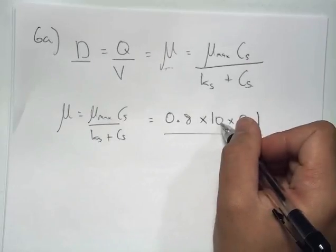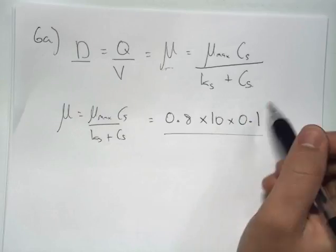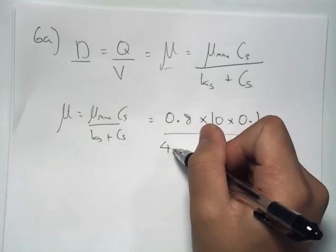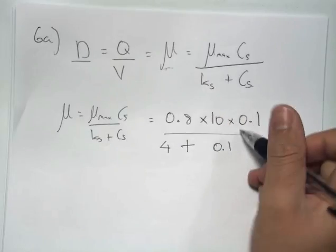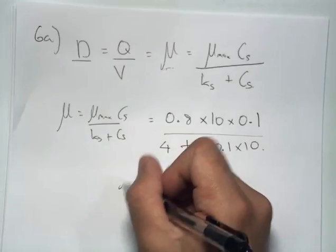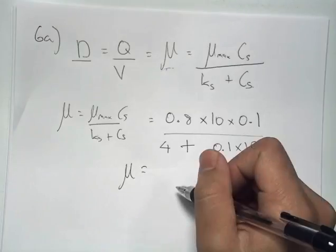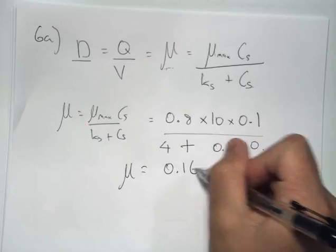Because the 10 grams per decimeter cubed is the initial substrate concentration, and we're interested in using the final substrate concentration. Put this over K_s, which is 4 grams per decimeter cubed plus 0.1 times 10. And this gives us a specific growth rate for our process of 0.16 hours to minus 1.